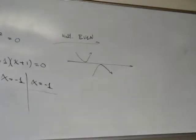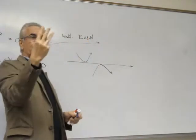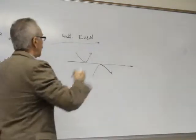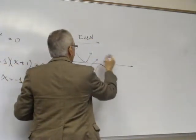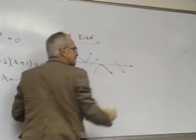If the multiplicity is odd number, so the same solution one time or three times or five times, in this case the function cross the axis x.